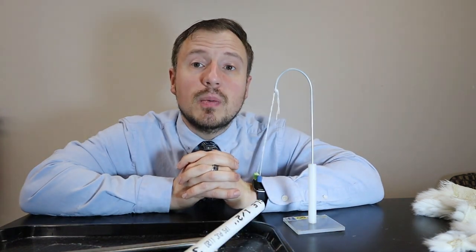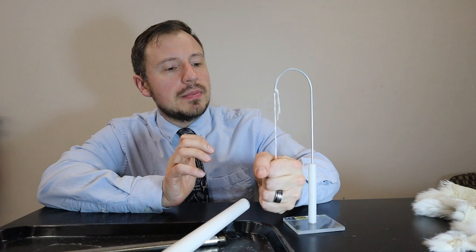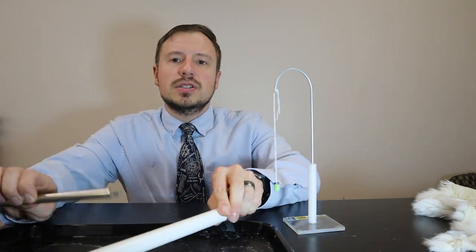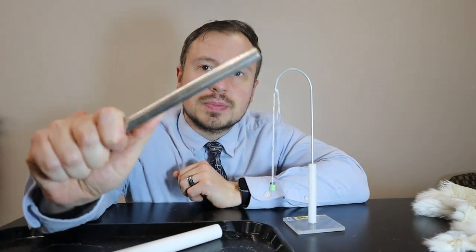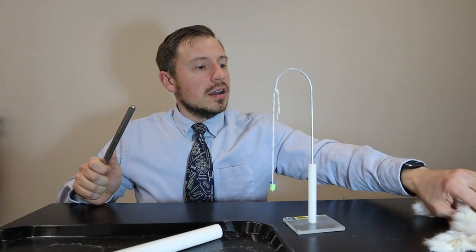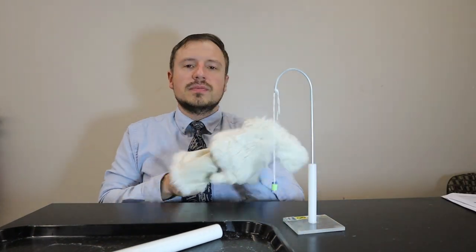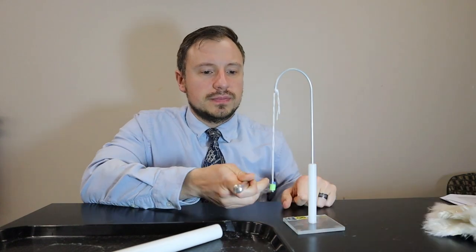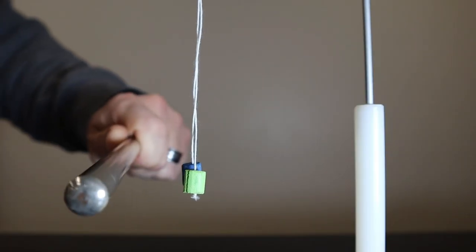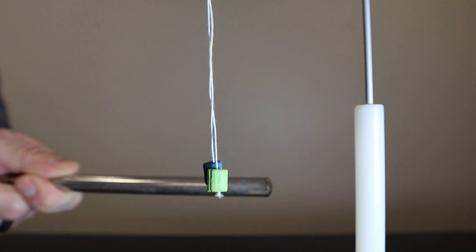Last part of this lab, what we're going to do is I'm going to grab the pith balls again, just get rid of the charge because we did touch it with a charge. Then I'm going to repeat the experiment with the metal rod. So I'm going to grab that fur, rub the metal rod with the fur. Nothing's really happening.